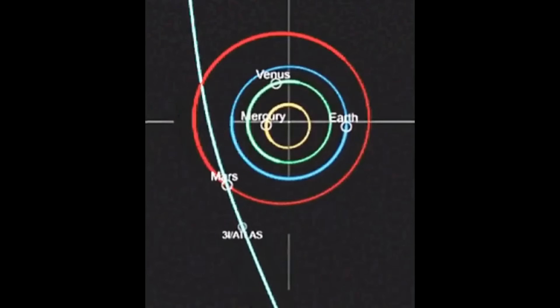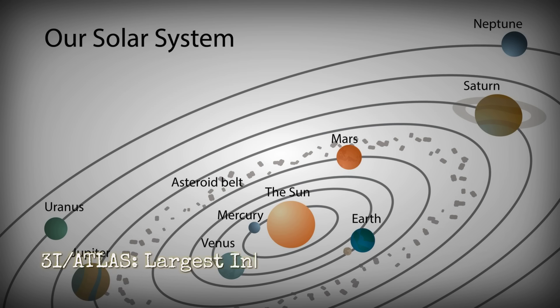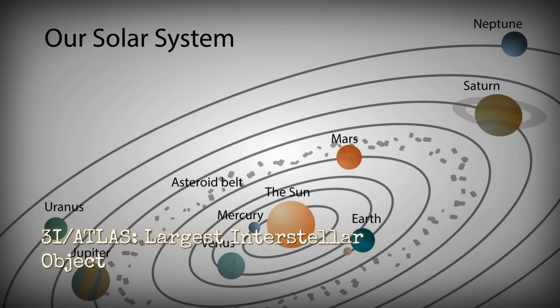Right now, as you're watching this, an interstellar object is racing through our inner solar system at 68 kilometers per second, and we can't see what's happening. It's called 3I/Atlas, the largest interstellar object ever detected.